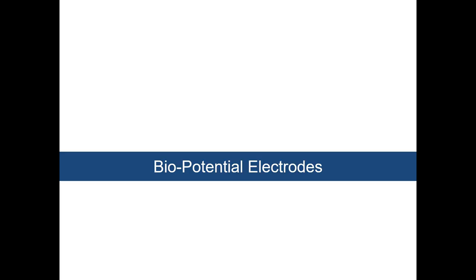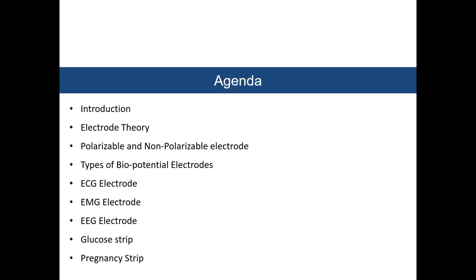In this chapter, we will study about Biopotential Electrodes and their use in Biomedical Sensors and Transducers. The agenda includes the introduction of Biopotential Electrodes, Electrode Theory, Polarizable and Non-polarizable Electrodes, and types of Biopotential Electrodes — ECG Electrode, EMG Electrode, EEG Electrode, Glucose Strip, and Pregnancy Strip.